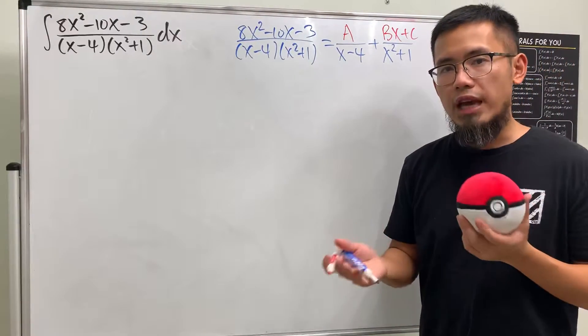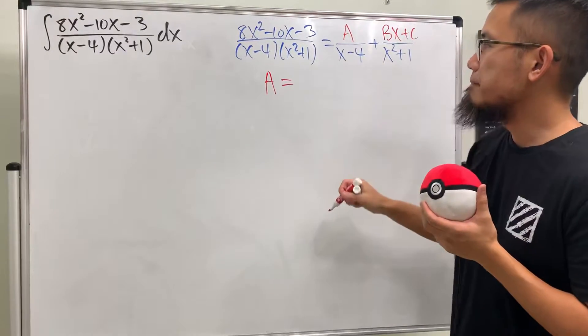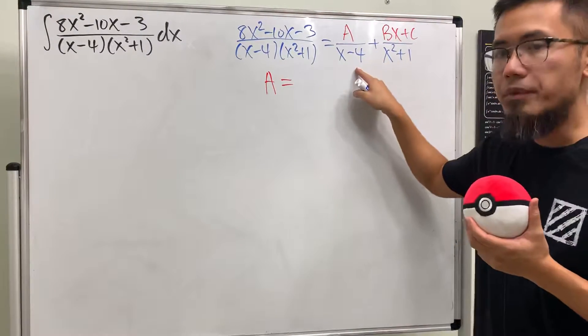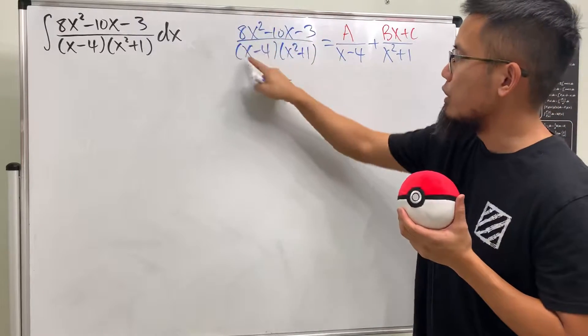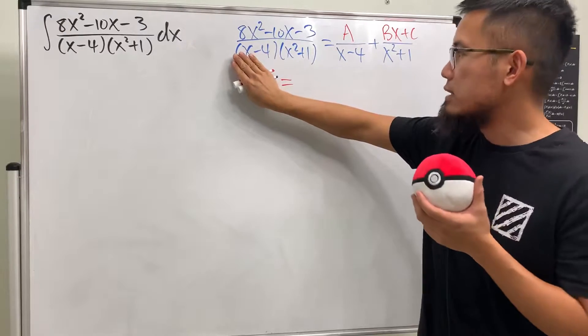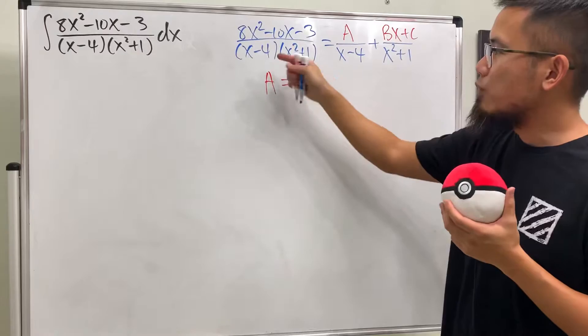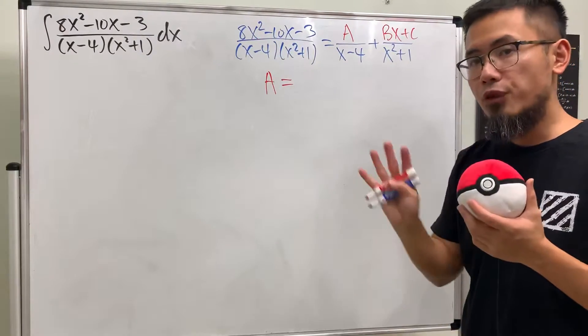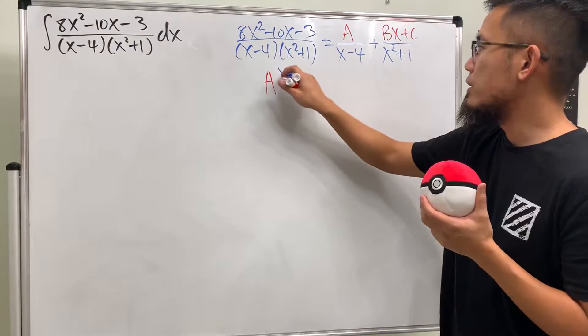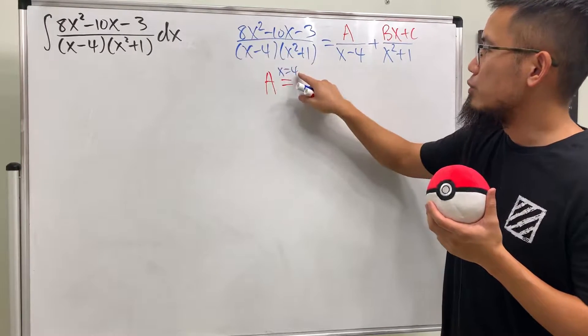The good news is that we can actually figure out A with the cover-up method. So this has the denominator x - 4, we come back to the original, cover up the same denominator, and we will have to ask ourselves how we can make that equal to zero. x - 4 to be zero, x has to be 4, so we're putting 4 in here and you remember to plug in 4 into the remaining x's.